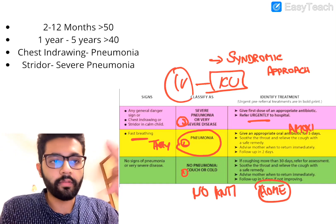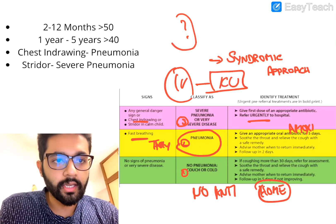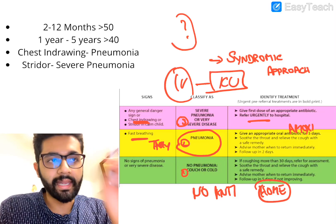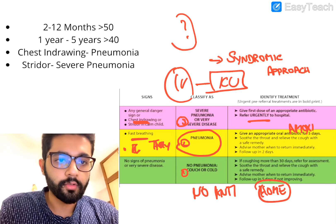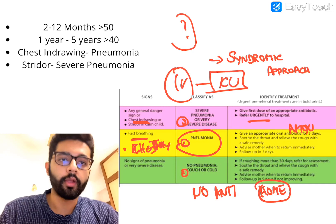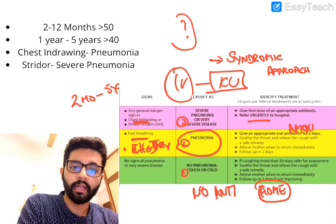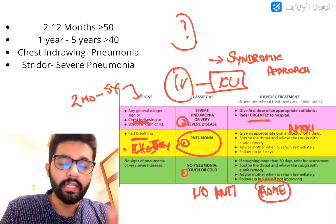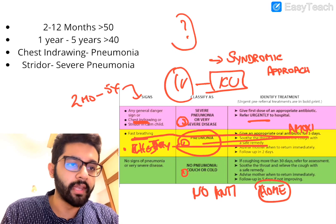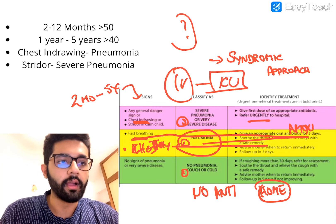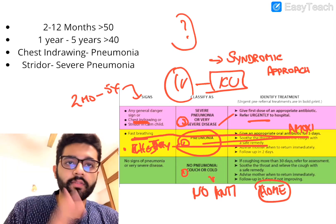Those were the three categories. One important note: IMNCI classifies chest in-drawing under severe pneumonia, but the latest WHO guidelines say chest in-drawing should also come under pneumonia. This classification applies only to children from two months to 59 months. For children less than two months — neonates — every pneumonia is severe, so there is only no pneumonia or severe pneumonia.